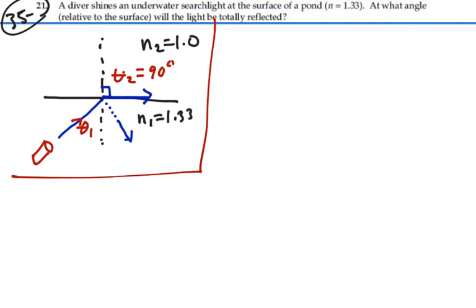We approach this with Snell's law: n1 sin theta 1 equals n2 sin theta 2. In this case we want to find theta 1, so theta 1 is going to equal the inverse sine of n2 divided by n1 times sine theta 2.